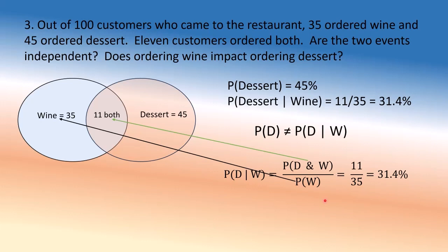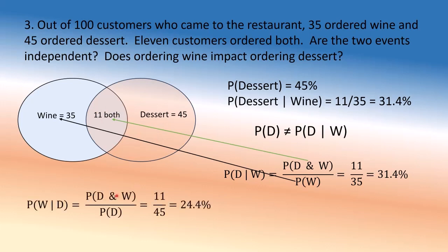Using the formula: P(D | W) = P(D ∩ W) / P(W) = 11/35 = 31.4%. And P(W | D) = P(D ∩ W) / P(D) = 11/45 = 24.4%. Since these conditional probabilities differ from the marginal probabilities, we conclude the events are not independent — ordering wine impacts ordering dessert.